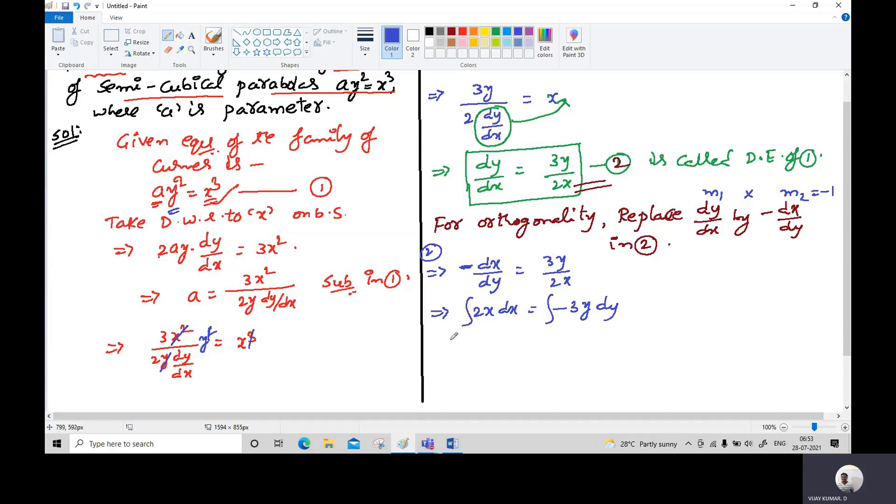Integration of x is x²/2, so the 2 gets cancelled, giving x². On the right side, -3y²/2 plus c. After integration, we add the constant parameter.